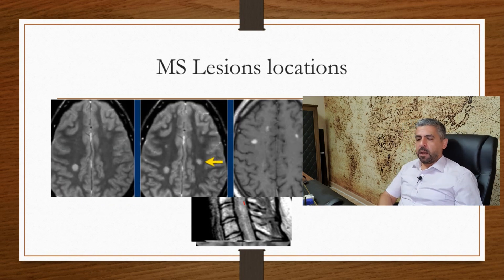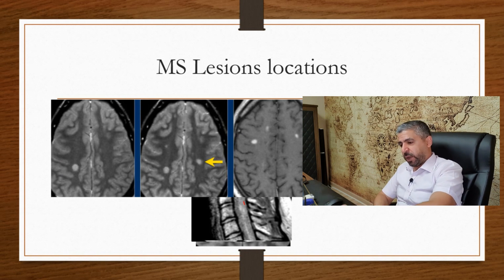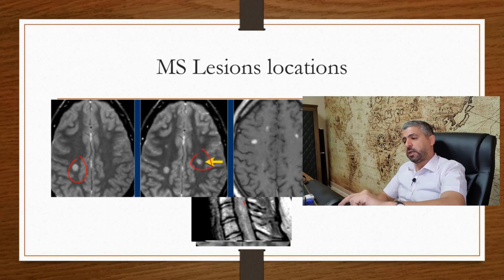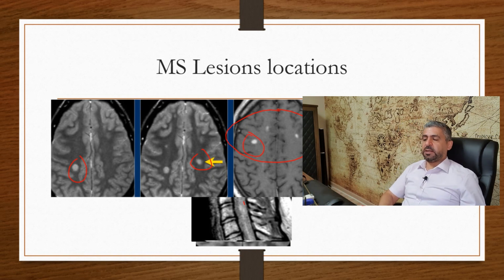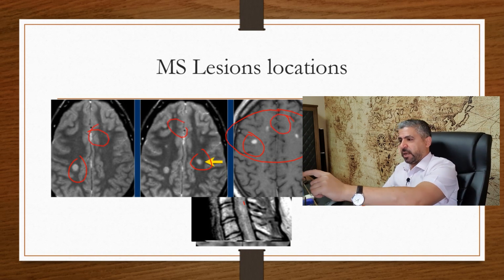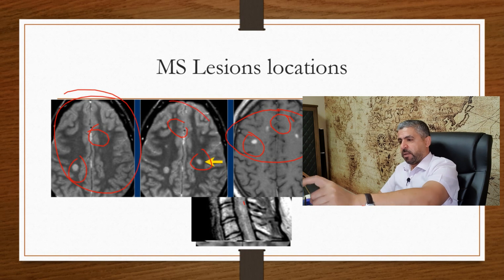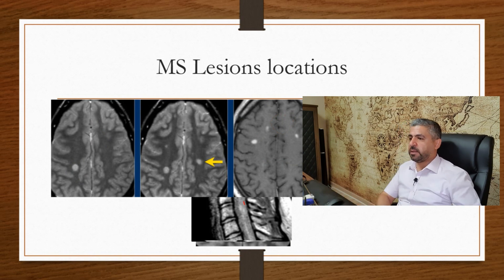Looking at MS lesions on MRI: we can see a lesion here, and another lesion starts here — so they are disseminated in time. On a T1 post-contrast image, you can see additional lesions, disseminated in time and space. Earlier the lesions were fewer; now there are more. Post-contrast images confirm dissemination in time and in space.